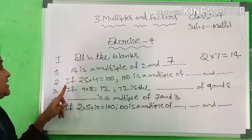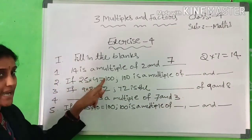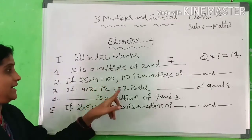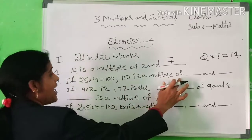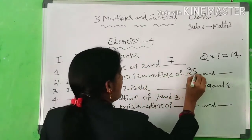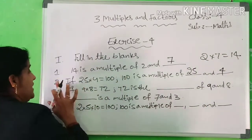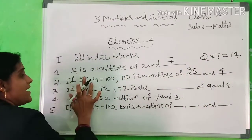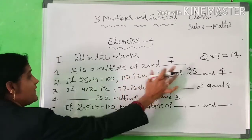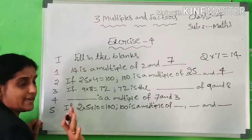Second one: if 25×4=100, then 100 is a multiple of 25 and 4.